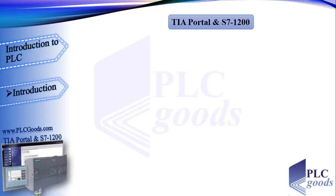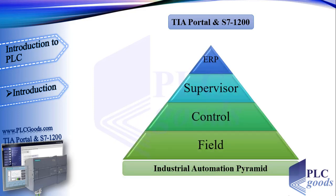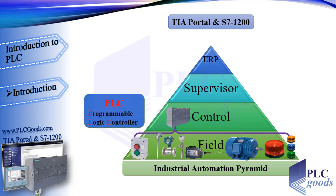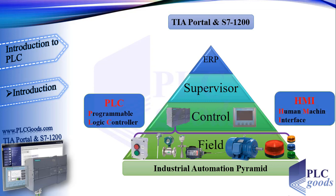Welcome to this video tutorial about TIA Portal and S7-1200. The goal relates to the industrial automation pyramid: at the lowest level there are electrical instruments such as push buttons, thermocouples, transmitters, sensors, and micro switches, which tell us what outputs like motors or signal lamps should be turned on or off. Today's PLCs — programmable logic controllers — help us achieve automatic control in industry. Alongside PLCs, displayers called HMIs (Human Machine Interface) visualize the industrial process for us.